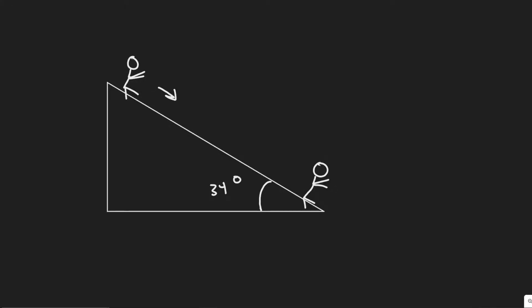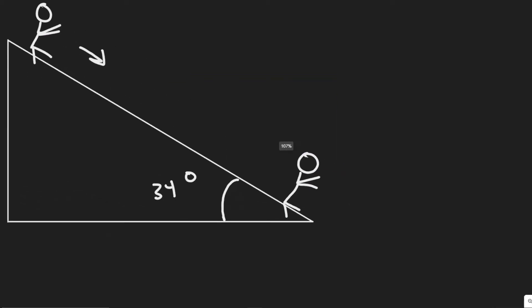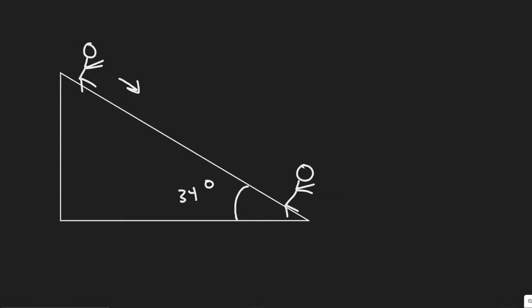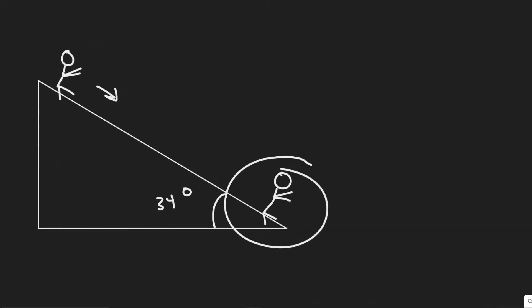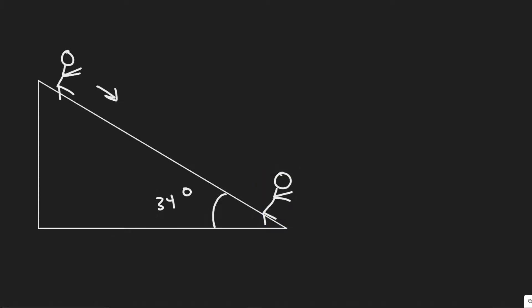In this problem, a child slides down a slide with a 34-degree incline, and at the bottom her speed is precisely half what it would have been if the slide was frictionless. We need to calculate the coefficient of kinetic friction between the slide and the child.